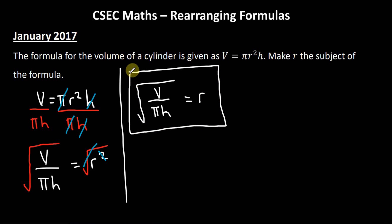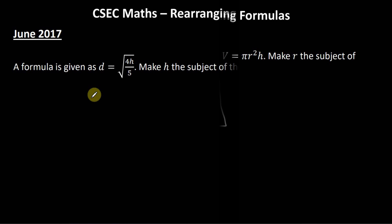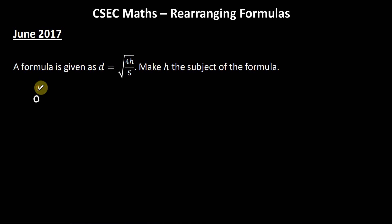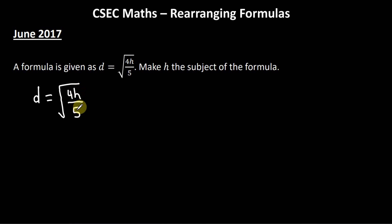We have successfully made r the subject with r on one side by itself. Now looking at the question given on the June 2017 paper: a formula is given as d = √(4h/5). Make h the subject of the formula. So we want to get h on one side by itself, and we'll rewrite the formula: d = √(4h/5).